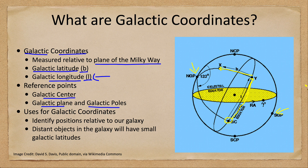What can we learn from galactic coordinates? They tell us a few things. We're identifying positions relative to our galaxy. If we're looking at distant objects in the galaxy, they will have small galactic latitudes because they're in our galaxy and our galaxy is flattened.